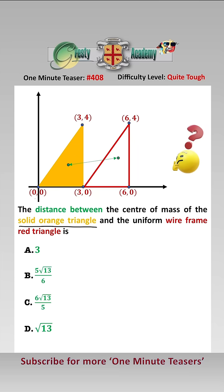Let's find the centre of mass of the solid orange triangle first. All we need to do is average the x-coordinates, which is equal to 2, and then average the y-coordinates, which is equal to 4 over 3. So far, so easy.